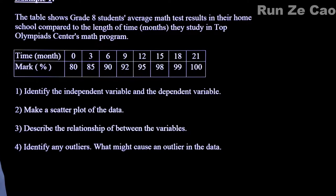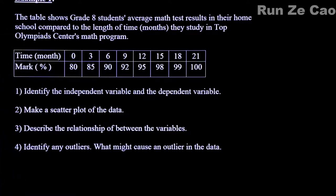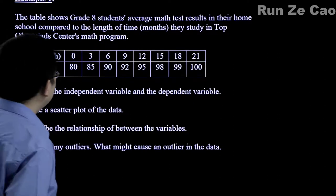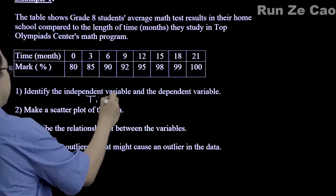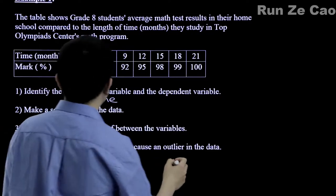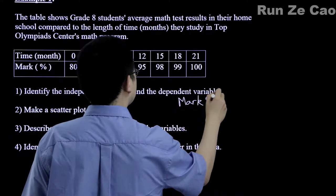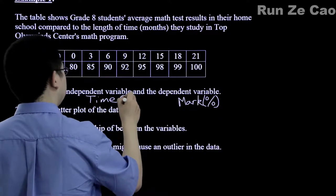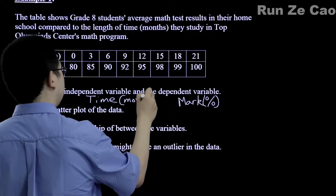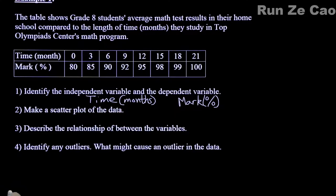This table shows grade A students' average grades after attending a math program for a certain number of months. The independent variable is time, and the dependent variable is mark in percent. Let's make a scatter plot of the data.